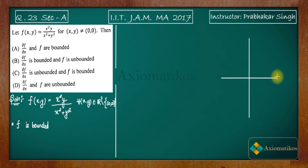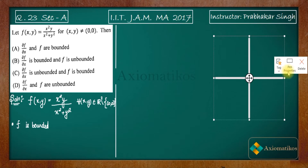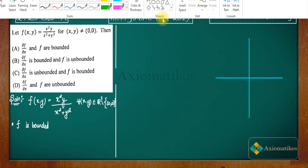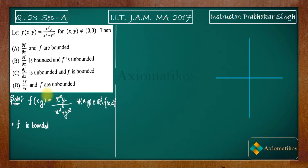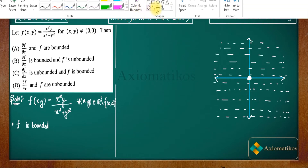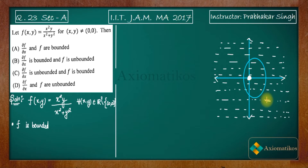Consider a Cartesian plane. Now, what is the domain for the given function? The domain is ℝ² minus {(0,0)}, so except the origin, every point is inside the domain. Let us highlight it — except the origin you have everything.